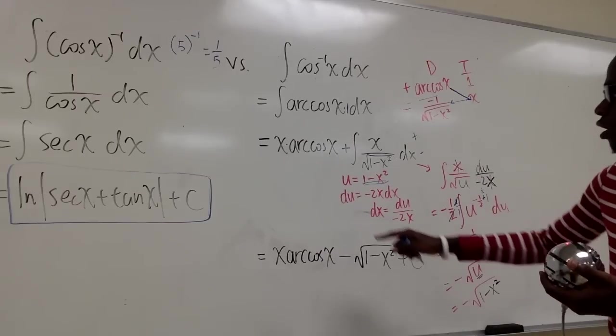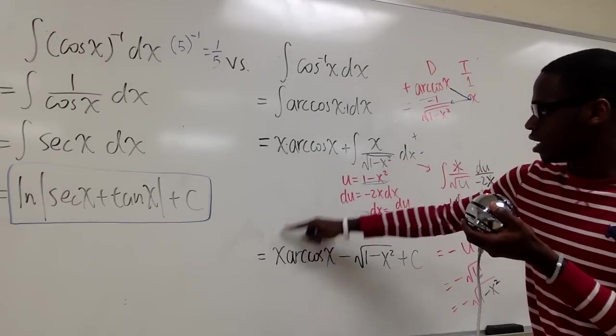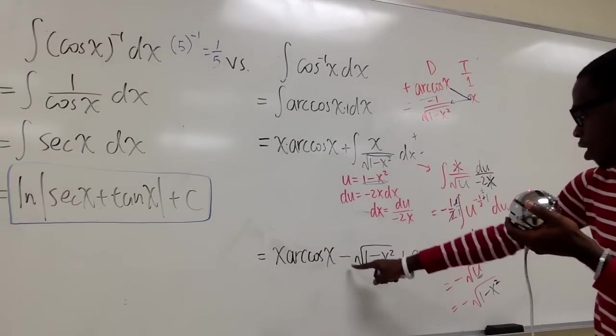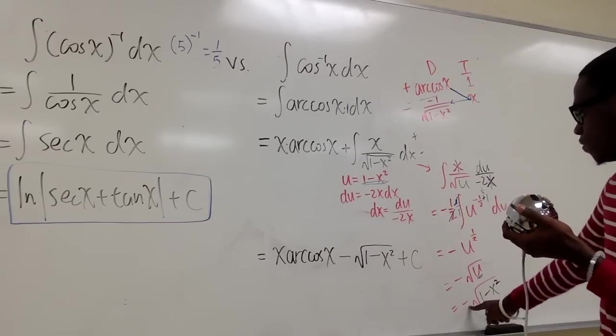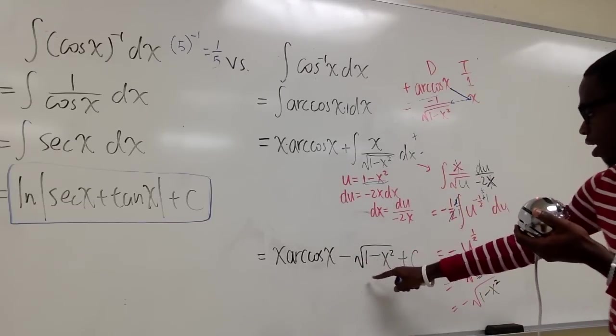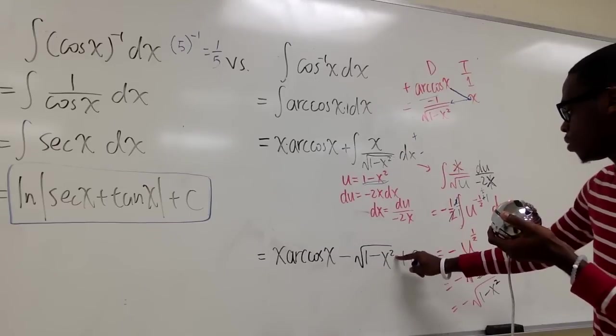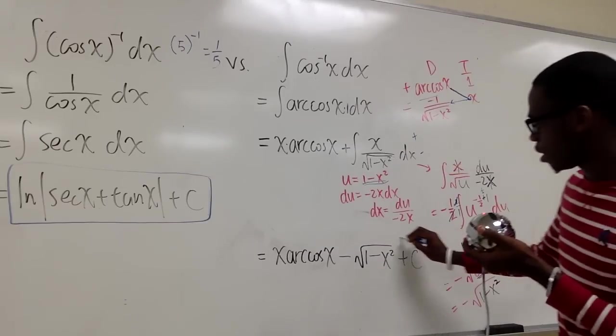And we bring it over here. So we have x times arc cosine x. Positive times a negative is negative. Radical 1 minus x squared plus c. And we are done.